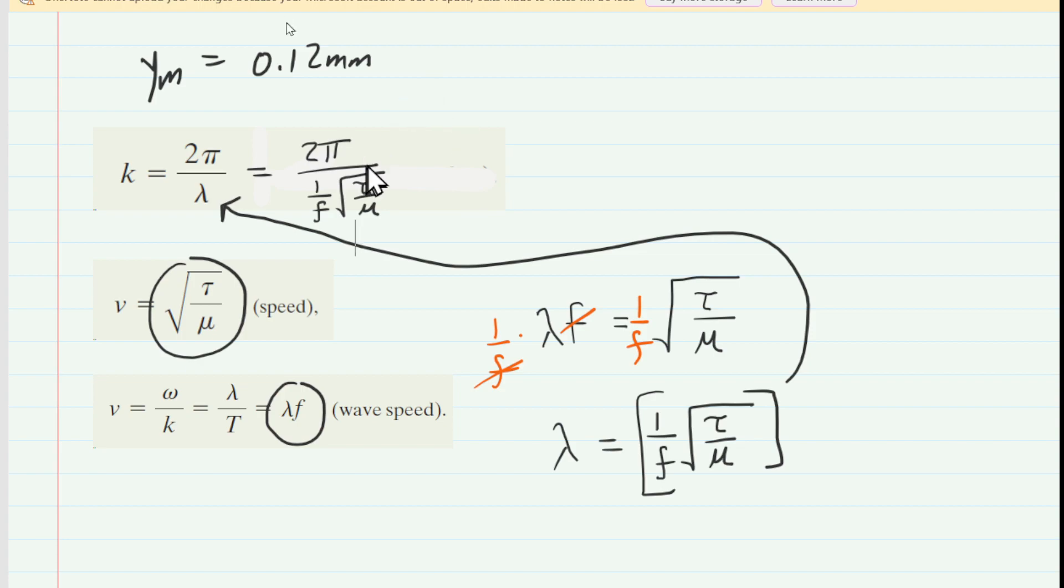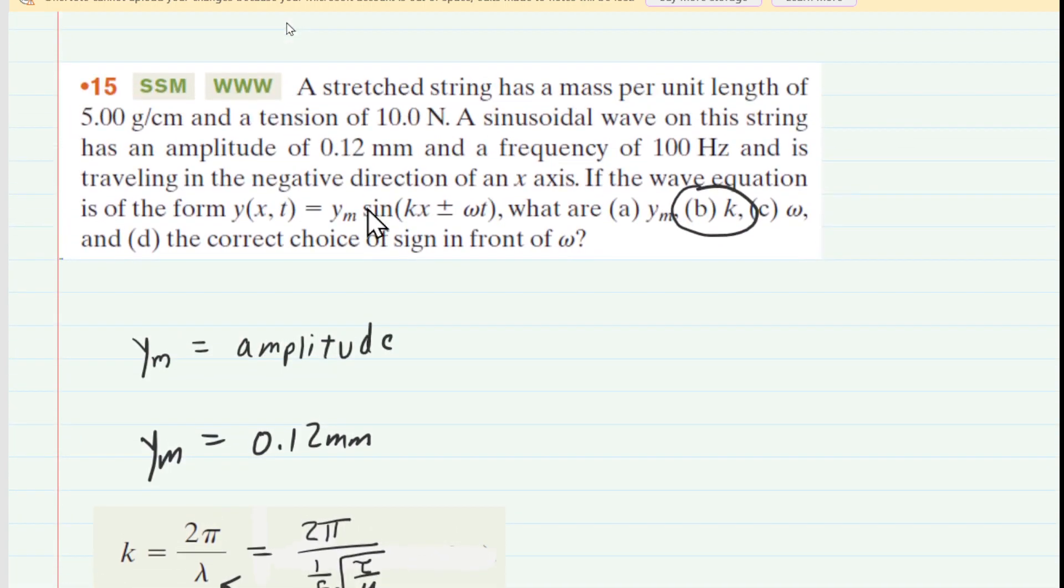And now that we've inserted that expression for the wavelength, let's go back to the question and gather the values for frequency, tension, and then this mass per unit length. And those values are stated directly in the question.